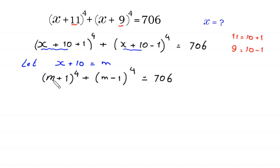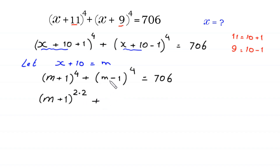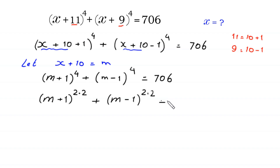The equation then becomes (m + 1) to the power 4 plus (m − 1) to the power 4 equals 706. We can rewrite (m + 1) to the power 4 as (m + 1) squared, whole to the power 2, and similarly (m − 1) to the power 4 as (m − 1) squared, whole to the power 2, equals 706.